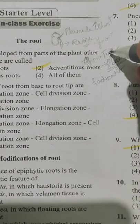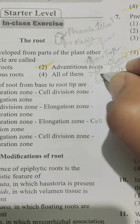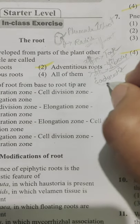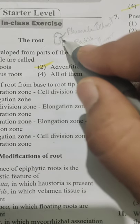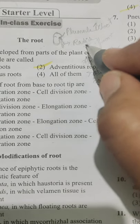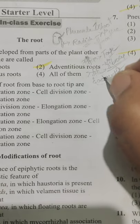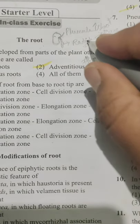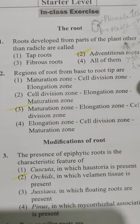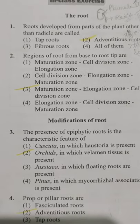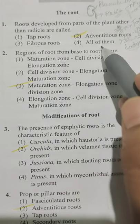In fibrous roots, the tap root is short-lived and undergoes decay, and a number of fiber-like roots develop from the base of the stem. Adventitious roots are those not developed from the radicle part of the embryo — they develop from any part of the plant other than the radicle. So the answer is Option 2: adventitious roots.